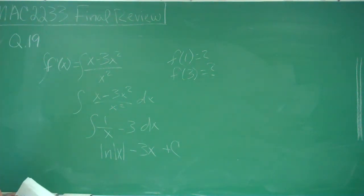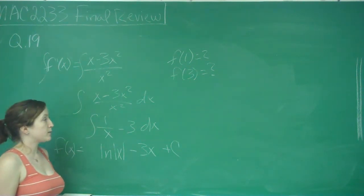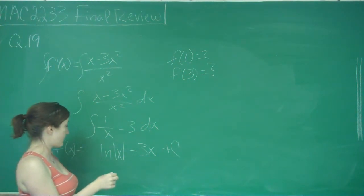So if this is our original function, what we can do is first find c by using that information they gave us, before we can find f(3).